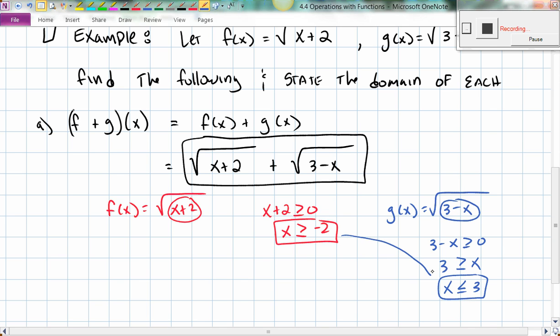So I have these two constraints here for f of x and g of x. So therefore, the domain for my sum function, f plus g of x, must be all real numbers x such that putting these two together yields this answer, negative 2, less than or equal to x, less than or equal to 3. So there is the domain for that one.